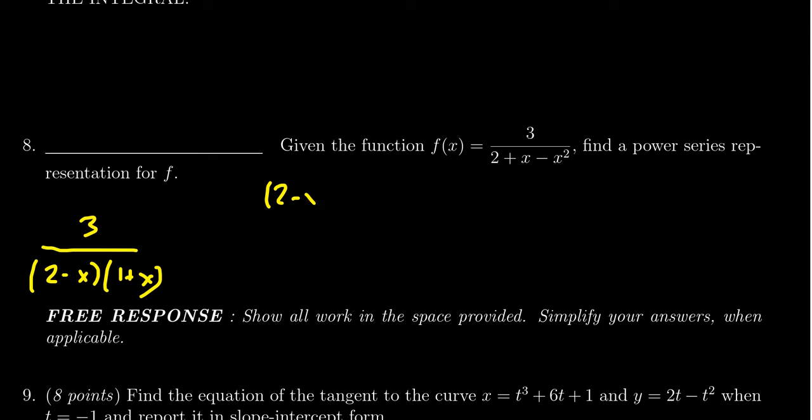That's good. And so that then informs us that the partial fractions would look like A over 2 minus x plus B over 1 plus x, like we see right there. And so then clearing the denominators, this would look like 3 equals A times 1 plus x and then B times 2 minus x.